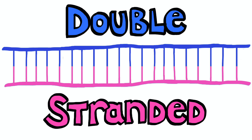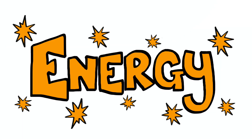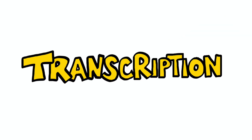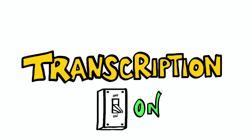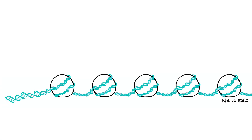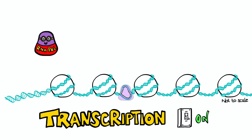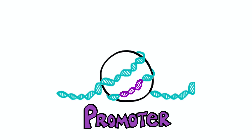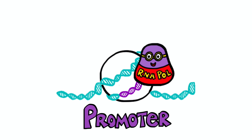DNA is double stranded, and in order to switch on a gene we need to separate those strands so we can access the DNA bases and the information they code for. This requires energy to break the bonds between the bases, and some base pairs require more energy than others. Breaking these bonds initiates a process called transcription — in other words, it switches a gene on. The protein that does this is called RNA polymerase. It uses energy to break the bonds and start transcription. It can do this on its own if the start of the gene is the right sequence and isn't wrapped up in histones, but if the start of the gene — known as its promoter — is wrapped up, as is the case for most genes, RNA polymerase has a problem.